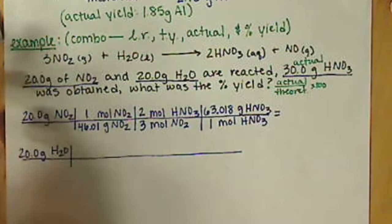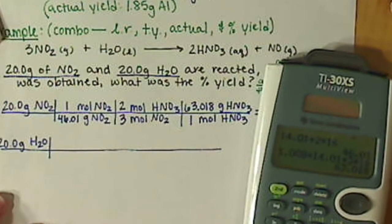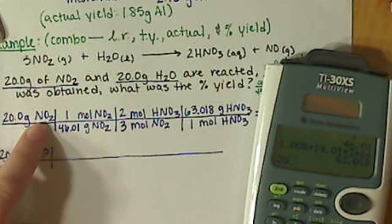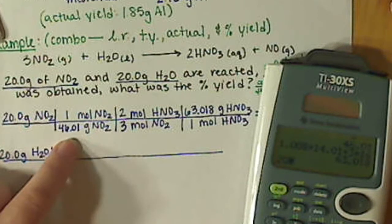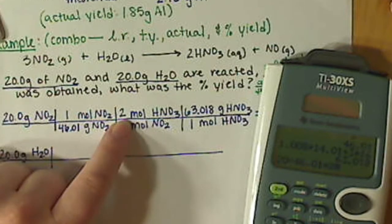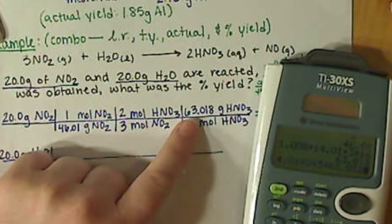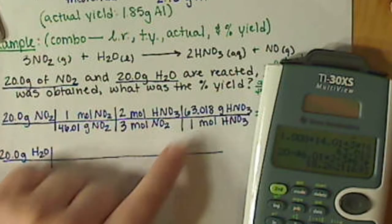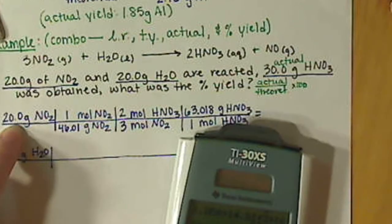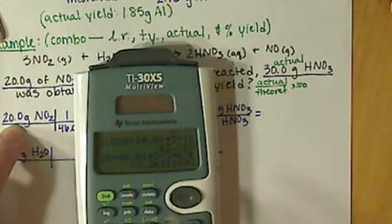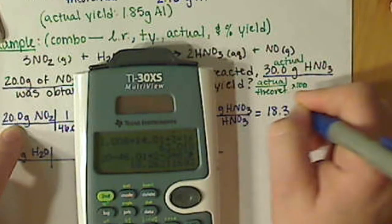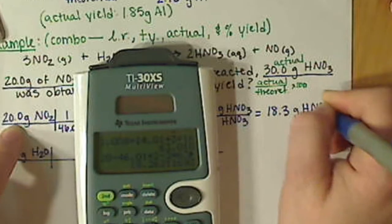So we can do this calculation here. I start with my 20 grams of nitrogen dioxide, multiply by 1, divide by 46.01 times 2, divided by 3, times 63.018. 3 sig figs in my starting value, so I need 3 sig figs in my answer. So 18.26211, so I have 18.3 grams of nitric acid.